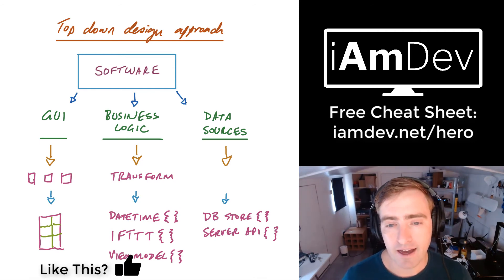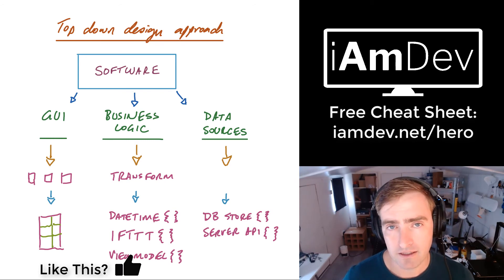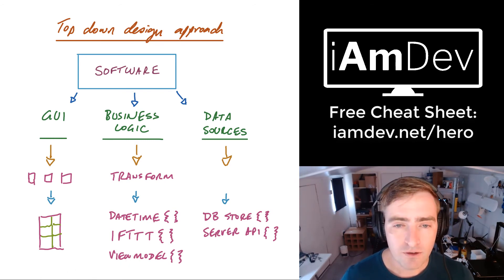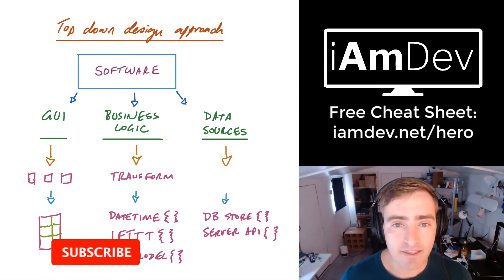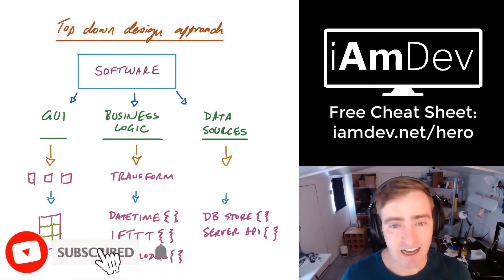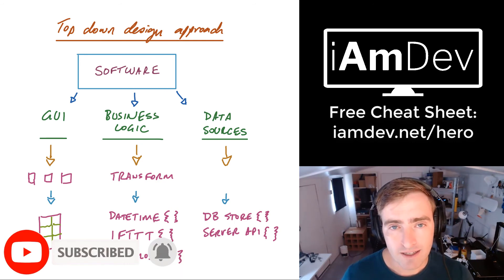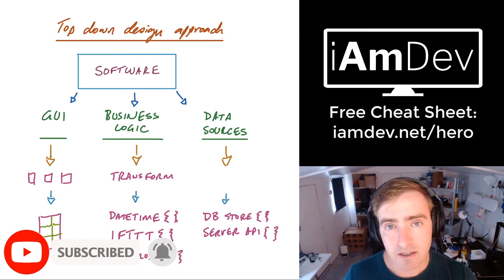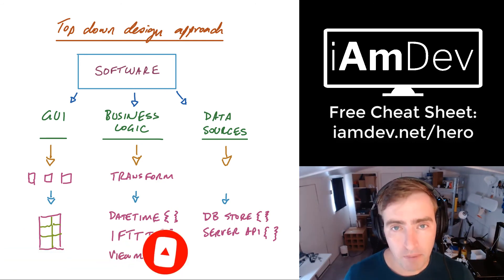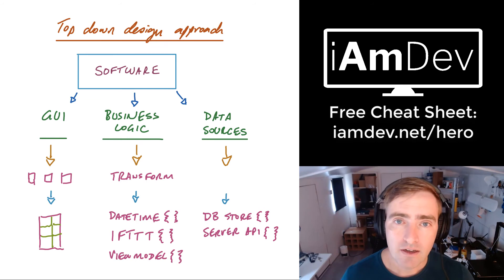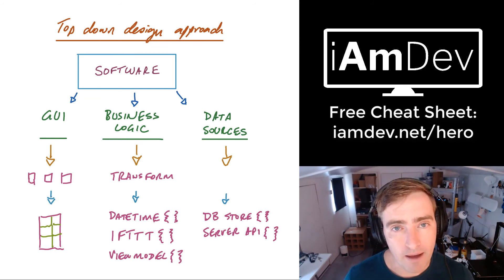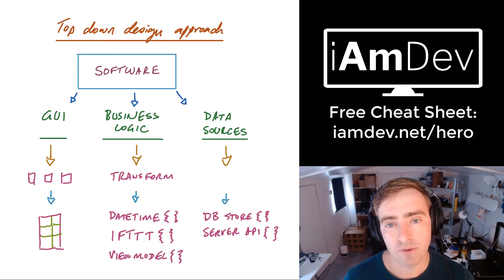Now in an interview when they ask you that, you don't have to run them through all of this. You simply have to say: the top-down design approach is where we break software into its most fundamental component parts so we can work on those component parts and eventually bring them back together to make software.